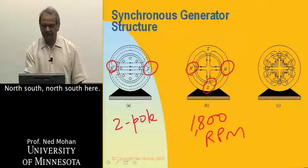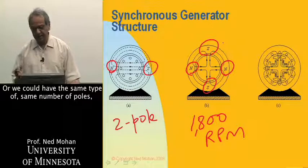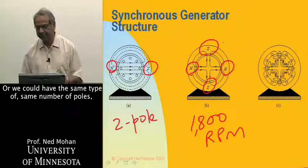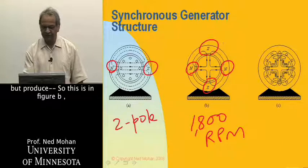north, south, north, south here. Or we could have the same type of, the same number of poles, but produced. So this is, in figure B, we have a cylindrical rotor,